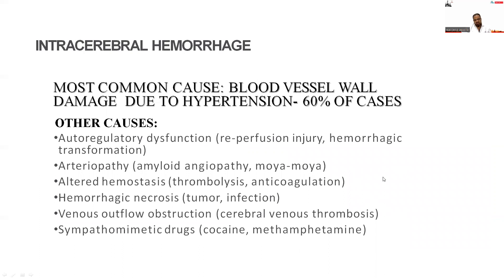The most common cause of intracerebral hemorrhage is hypertension, constituting about 60% of ICH cases. Other causes include auto-regulatory dysfunction like reperfusion injury, hemorrhagic transformation of ischemic stroke, arteriopathies, cerebral amyloid angiopathy, altered hemostasis from thrombosis or anticoagulation, hemorrhagic necrosis from tumor and infections, venous outflow obstruction, cerebral venous thrombosis, and sympathomimetic drugs like cocaine and amphetamines.